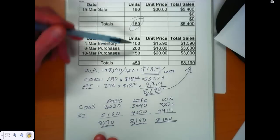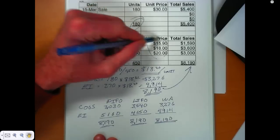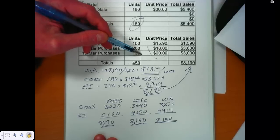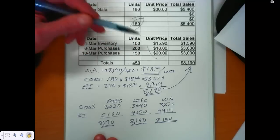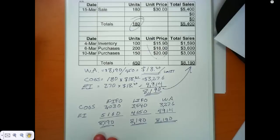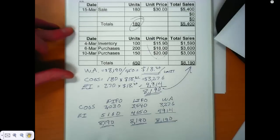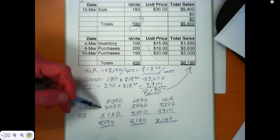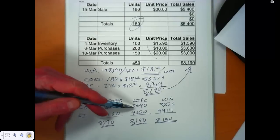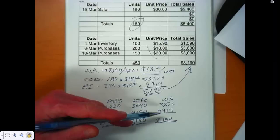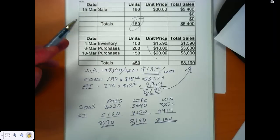If we saw this trend reversing—paying $20, then $18, then $15.90—that's deflation, and we'd see these relationships flip-flop. FIFO would give the greatest cost of goods sold and lesser net income. LIFO would give lesser cost of goods sold and greater net income. Weighted average would be somewhere in between, splitting the difference.